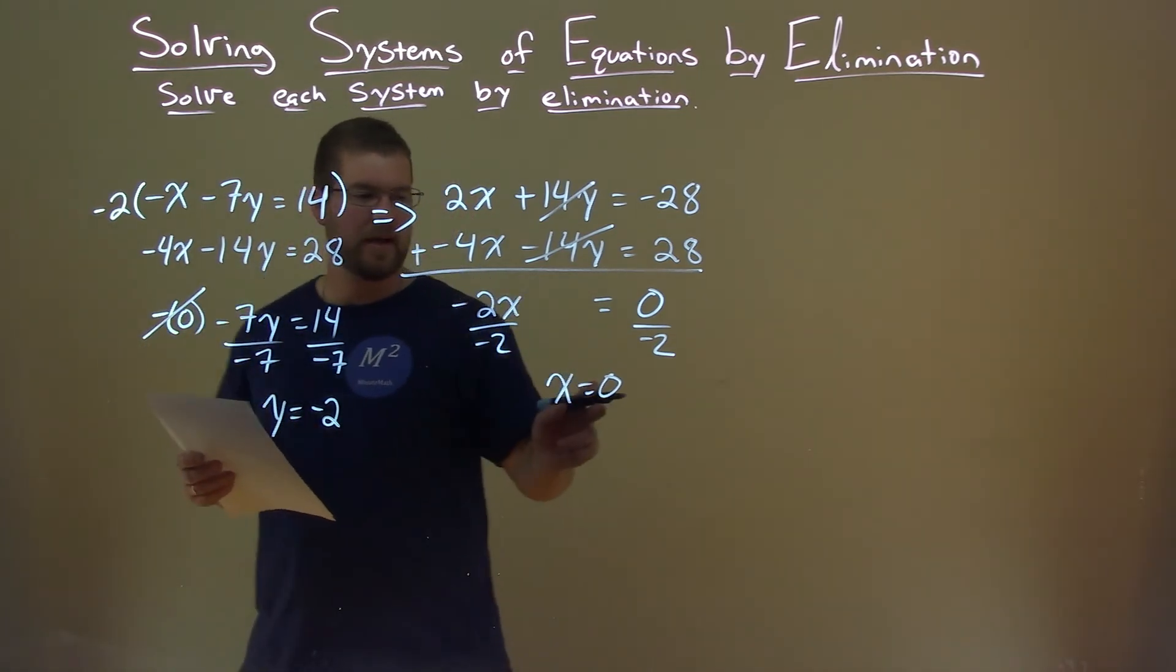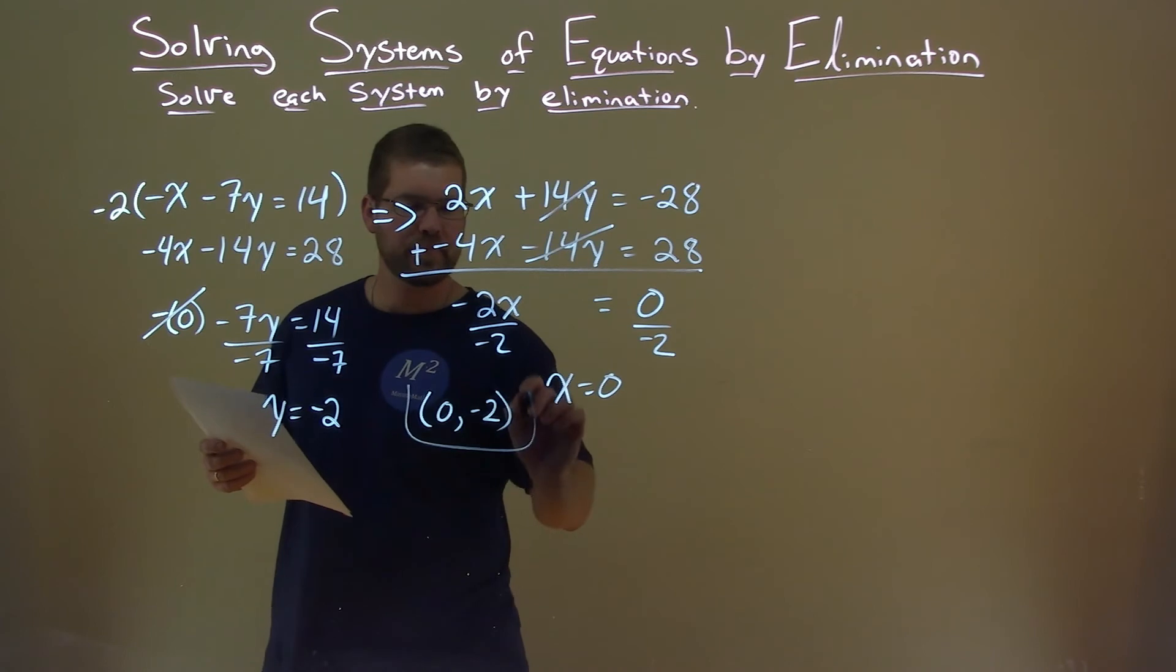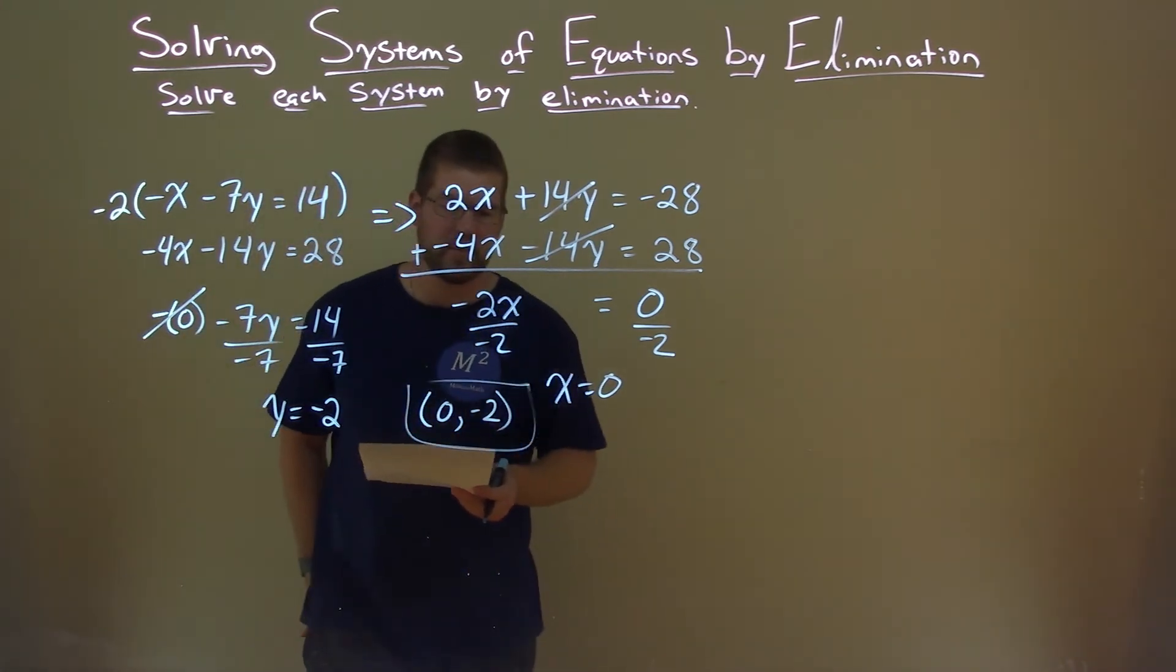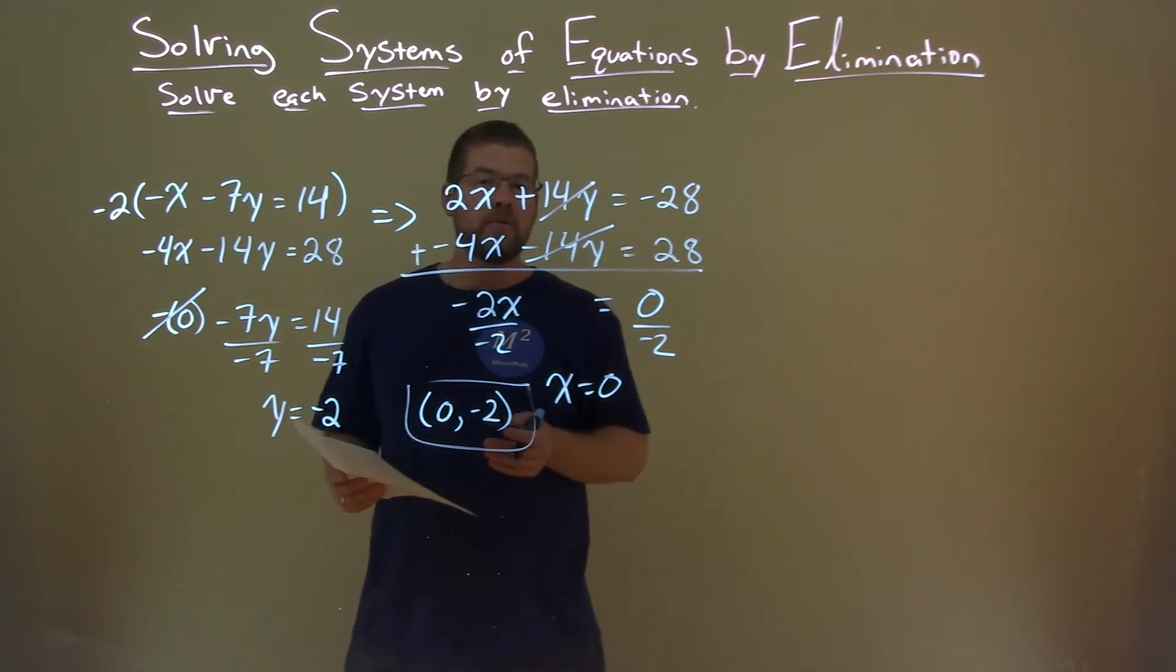And so now we're left with x is 0, y is negative 2. Let's write that as a coordinate point, and there is our final answer: 0 comma negative 2. I hope this video helped you and you learned something.